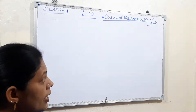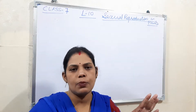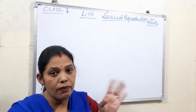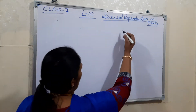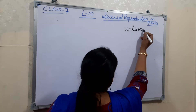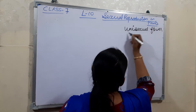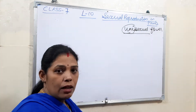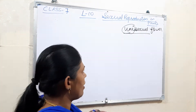In some plants only one sex organ is present — that means either male or female, both will not be there. Such flowers are known as unisexual flowers. Unisexual means 'uni' — single — so either the male sex organ or the female sex organ, only one will be there.